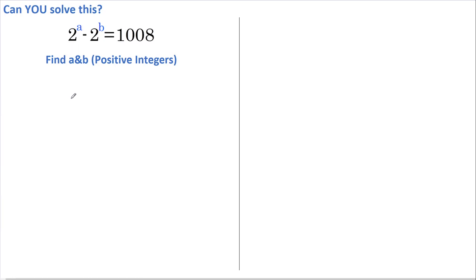Pause the video now if you want to try it yourself. Okay, let's begin. Since a and b are both positive integers, a must be greater than b. And if we were to say that k is the difference between a and b, then we can say that a equals b plus k.